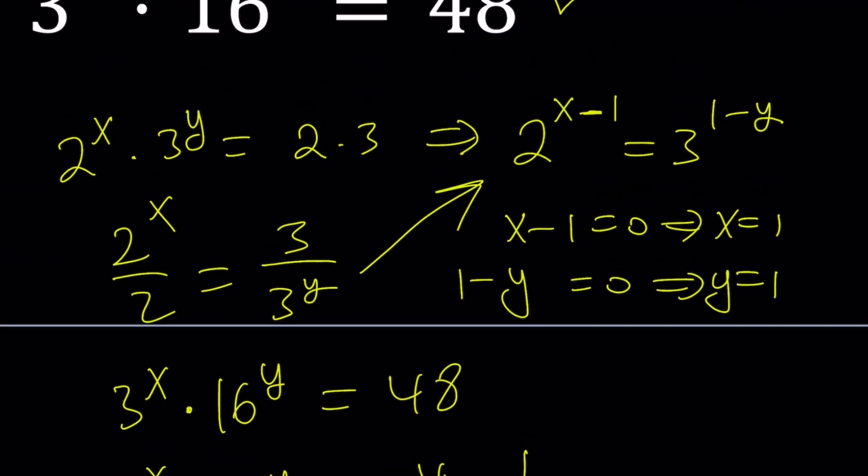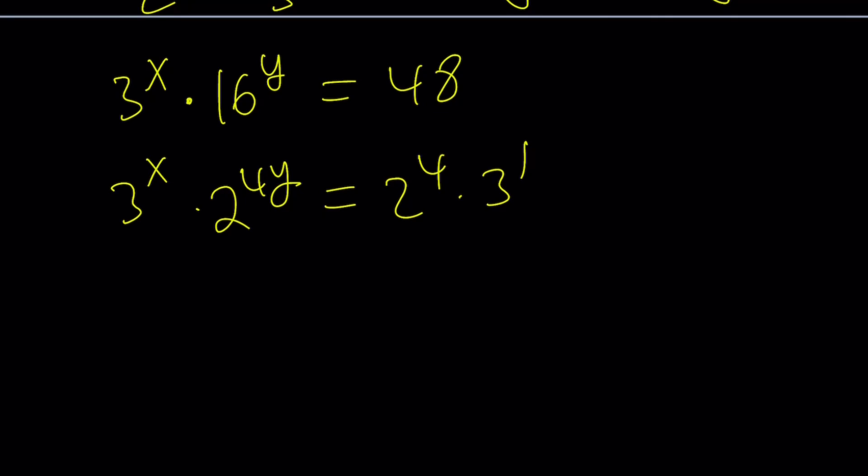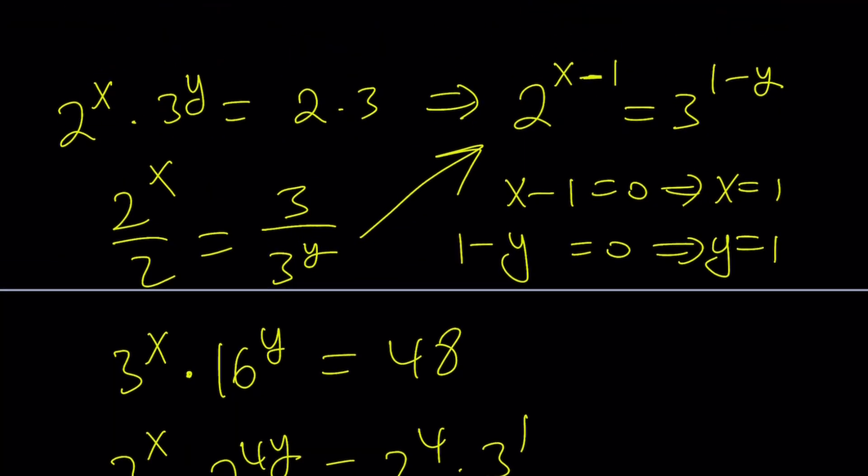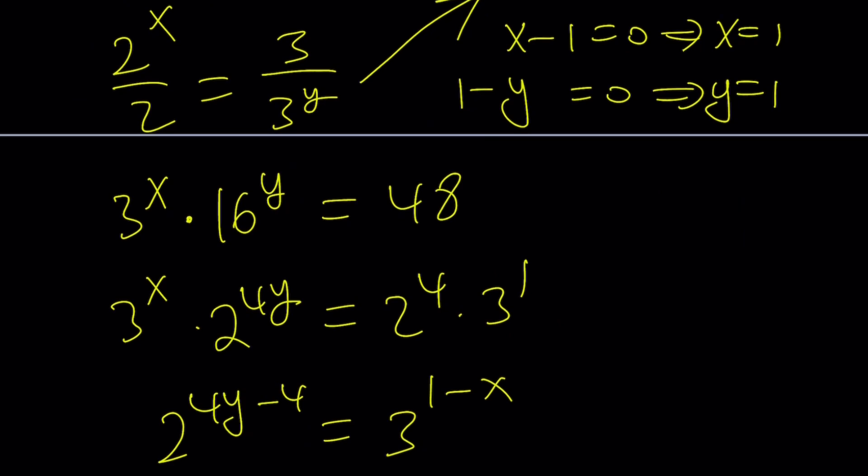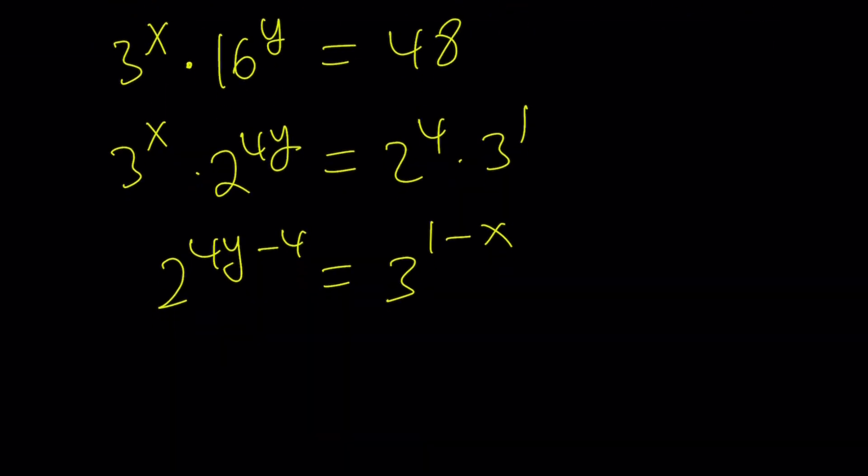So I'm going to write it as 2^4 times 3^1 and then put the 3s together just like before. Well, let's keep the 2s on the left hand side, shall we? 2^(4y-4) equals 3^(1-x). Awesome. Now what did we get? We got something similar. Yeah, if you look at the expressions, y equals 1 and x equals 1 is going to work because it's going to make both of them equal to 0. So 2^0 equals 3^0. No question about it, right?